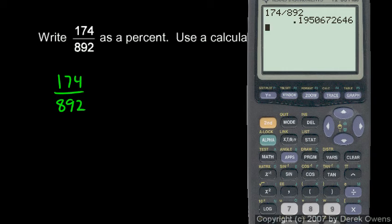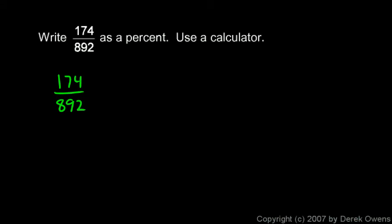I'm just going to round that to 0.195, so that's approximately equal to - and I'll write a little squiggly equal sign to mean approximately - that's approximately 0.195. And then to write it as a percent, I just move my decimal point over two places and I get an answer of 19.5 percent.